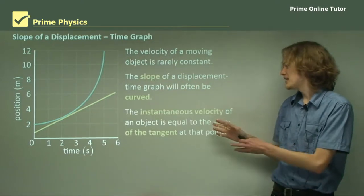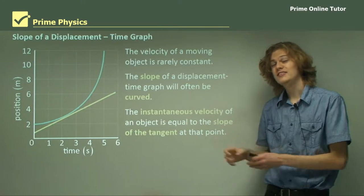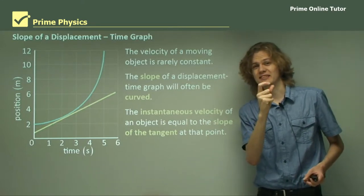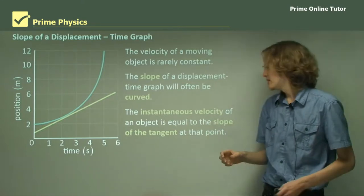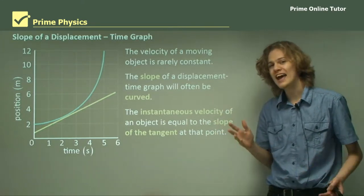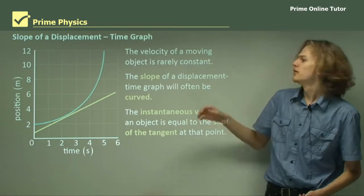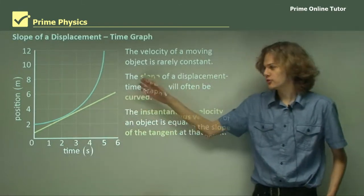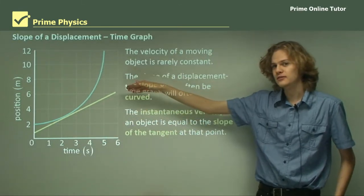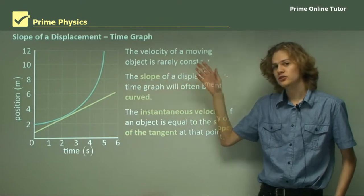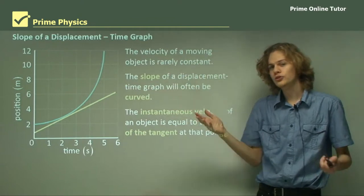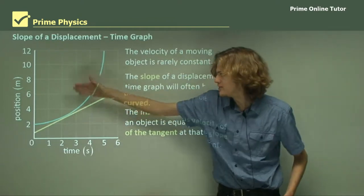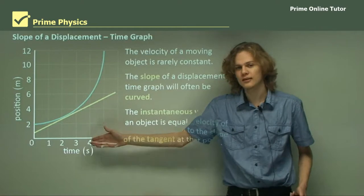The instantaneous velocity of an object — that is, the exact velocity at any one instant — can be found by finding the slope of the tangent. We can see a tangent drawn next to the curve here. The slope of this tangent is the velocity of the object at that very point in time, at exactly two seconds.